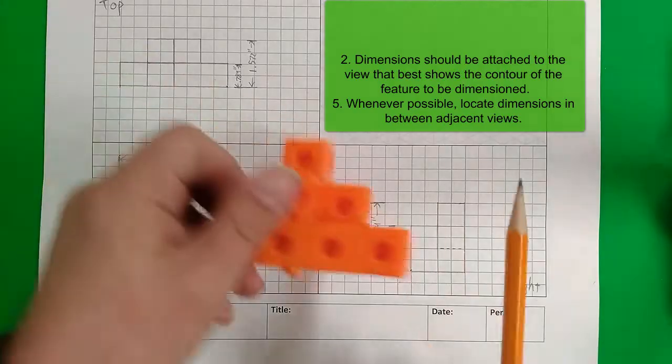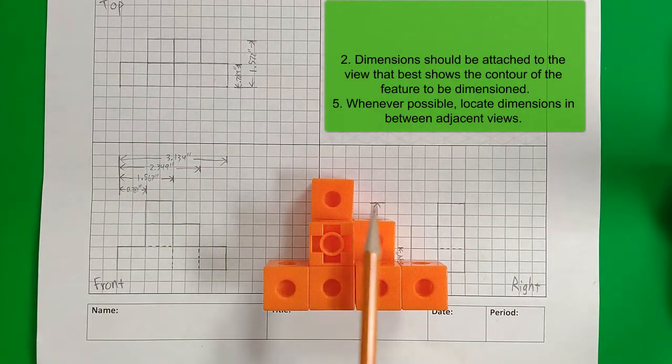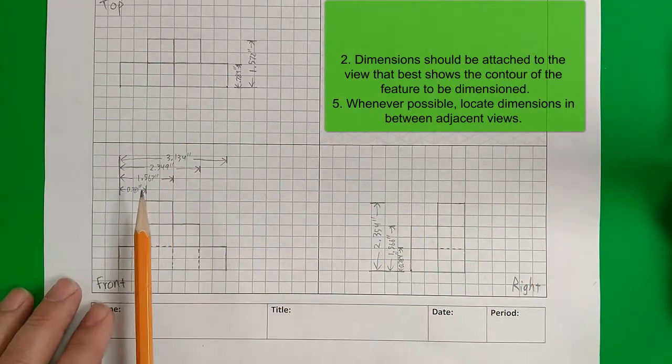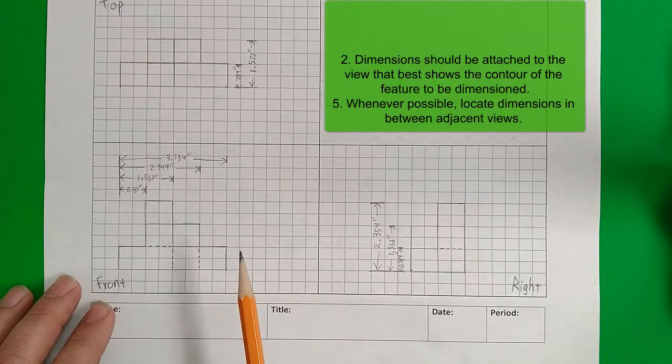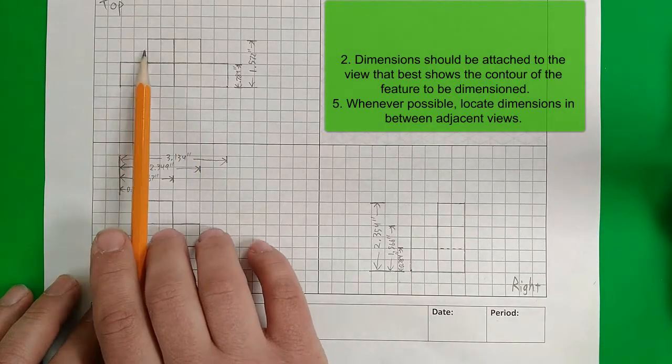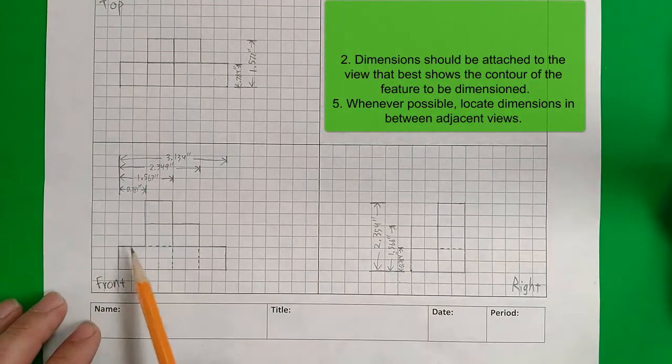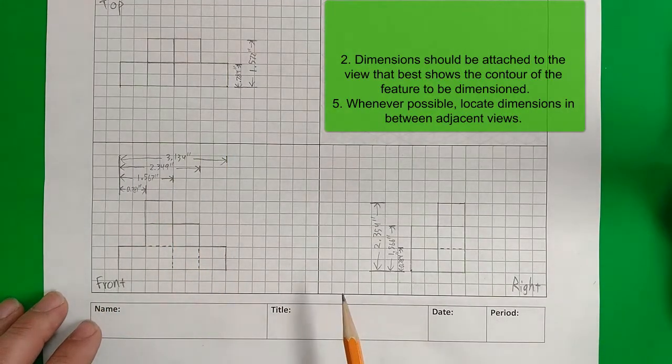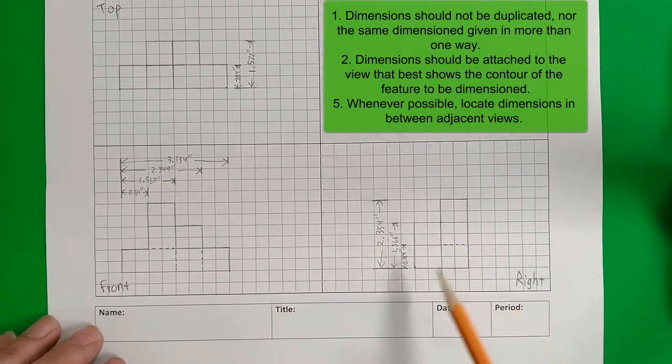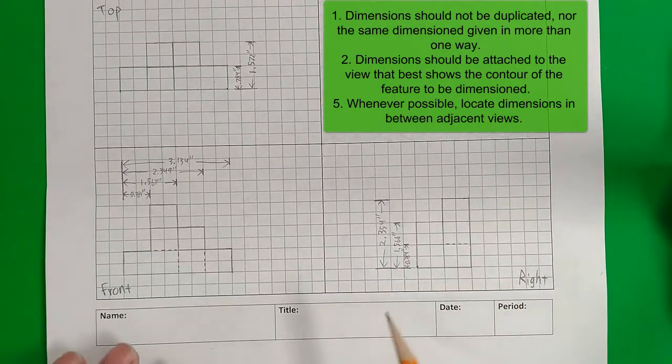Whenever possible, put the dimensions on the side that best shows the shape or contour of the feature being dimensioned. So in order to measure the width from here to each of these pieces, we put that on this view. As opposed to here, where we really only see these surfaces. So the overall shape is better here.